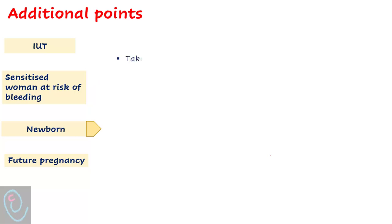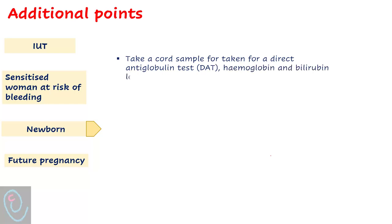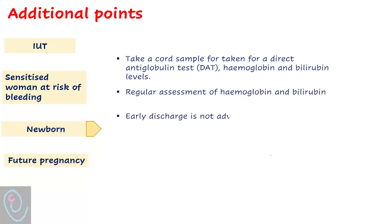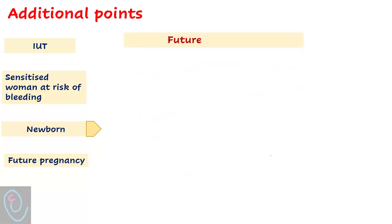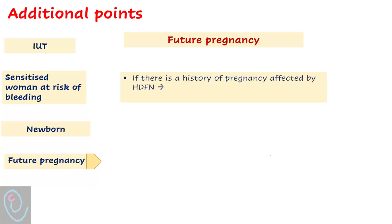Regarding neonatal management, take a cord sample for direct antiglobulin test, hemoglobin, and bilirubin level. Perform regular assessment of hemoglobin and bilirubin. Early discharge is not advisable; encourage breastfeeding and remember that some infants may experience anemia persisting for a few weeks after birth. Regarding future pregnancy, if there is a history of pregnancy affected by hemolytic disease of the fetus and newborn, refer in all subsequent pregnancies to a fetal medicine specialist.